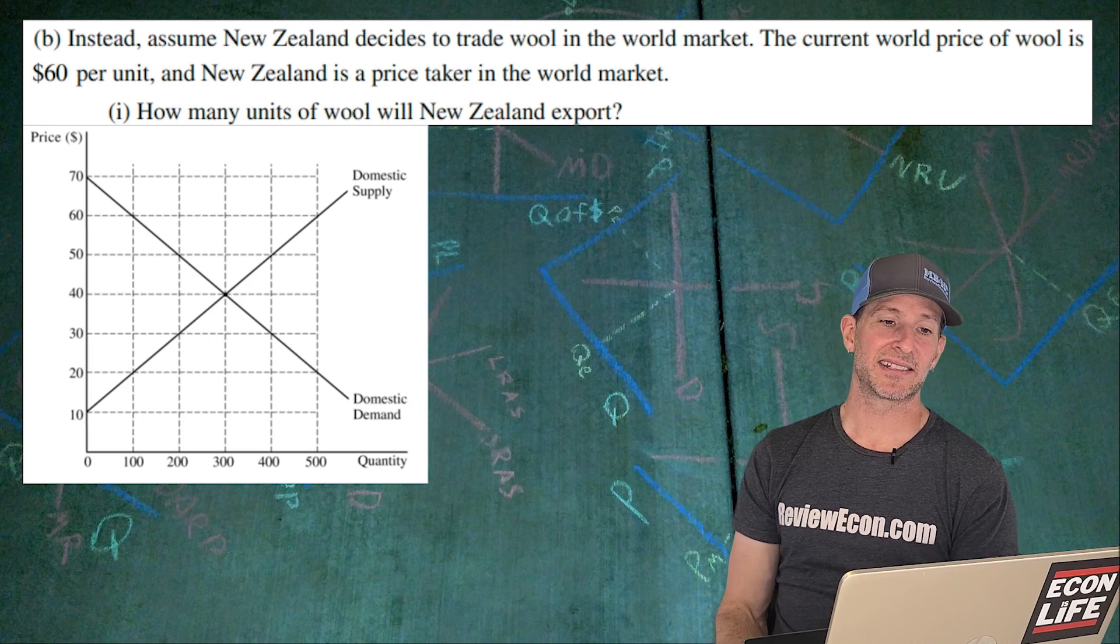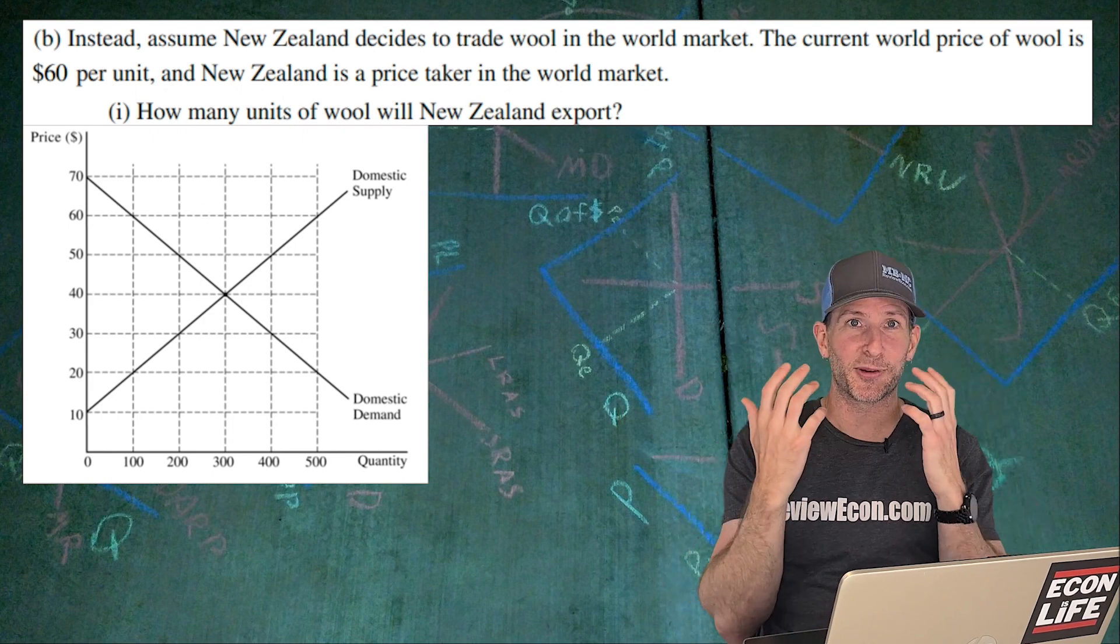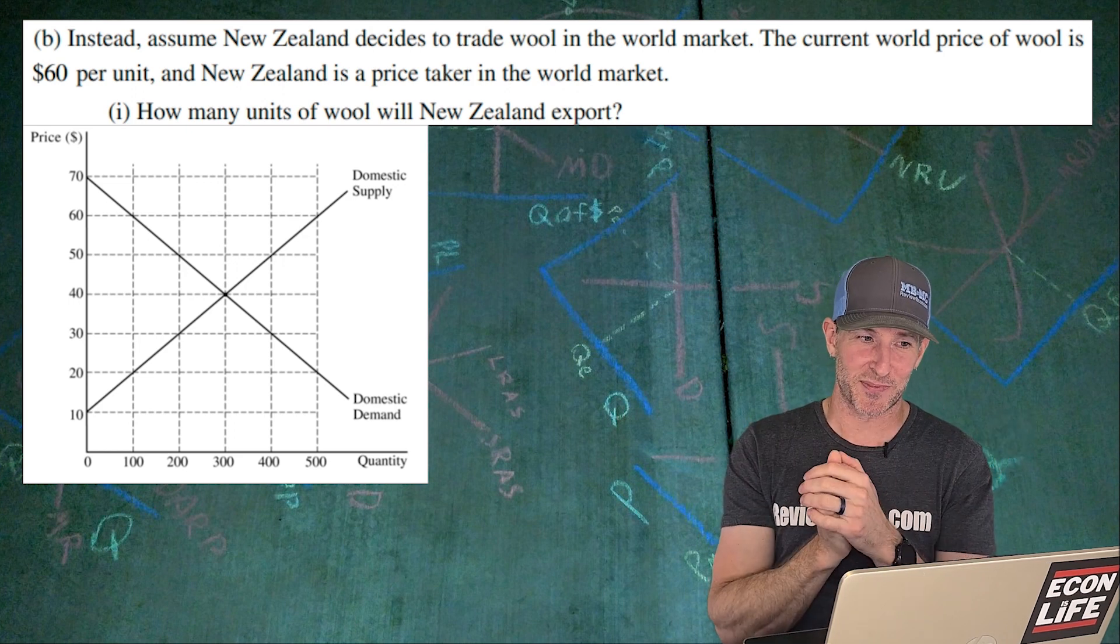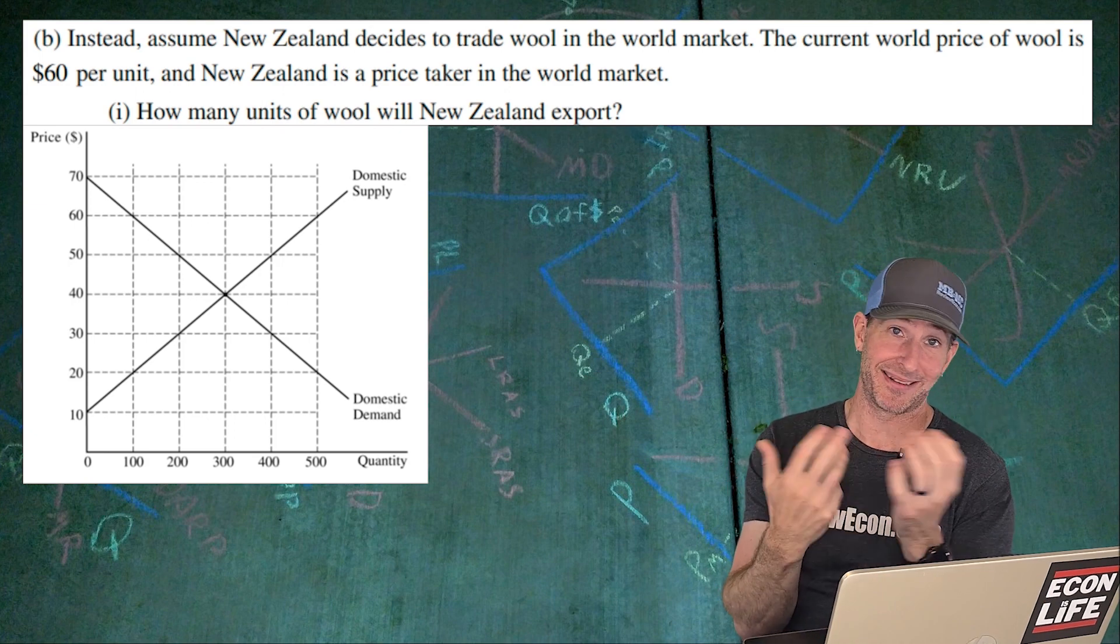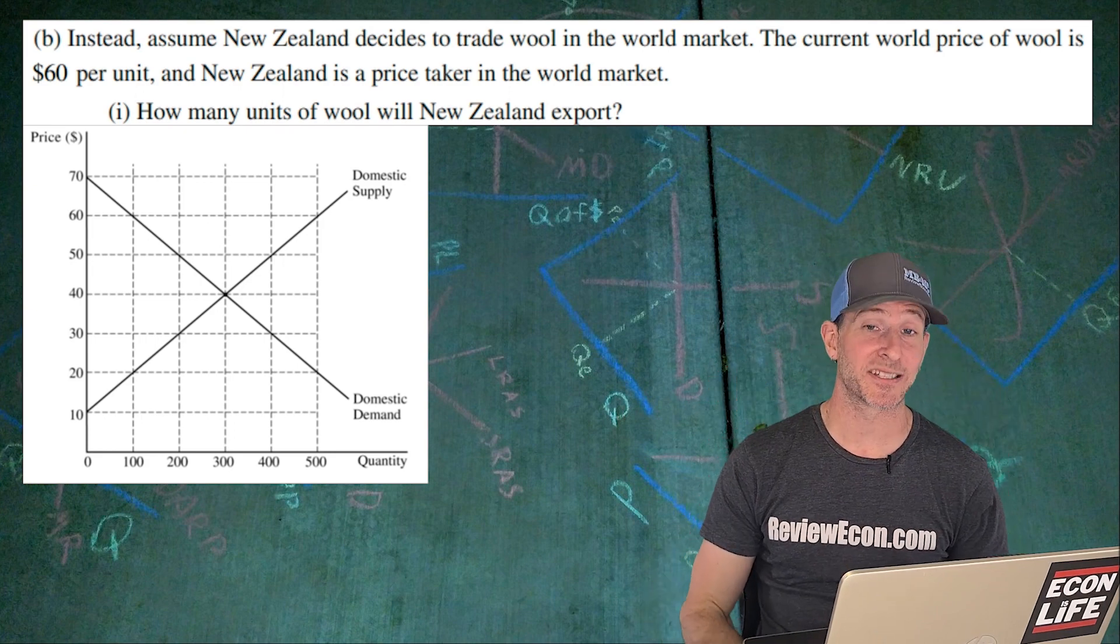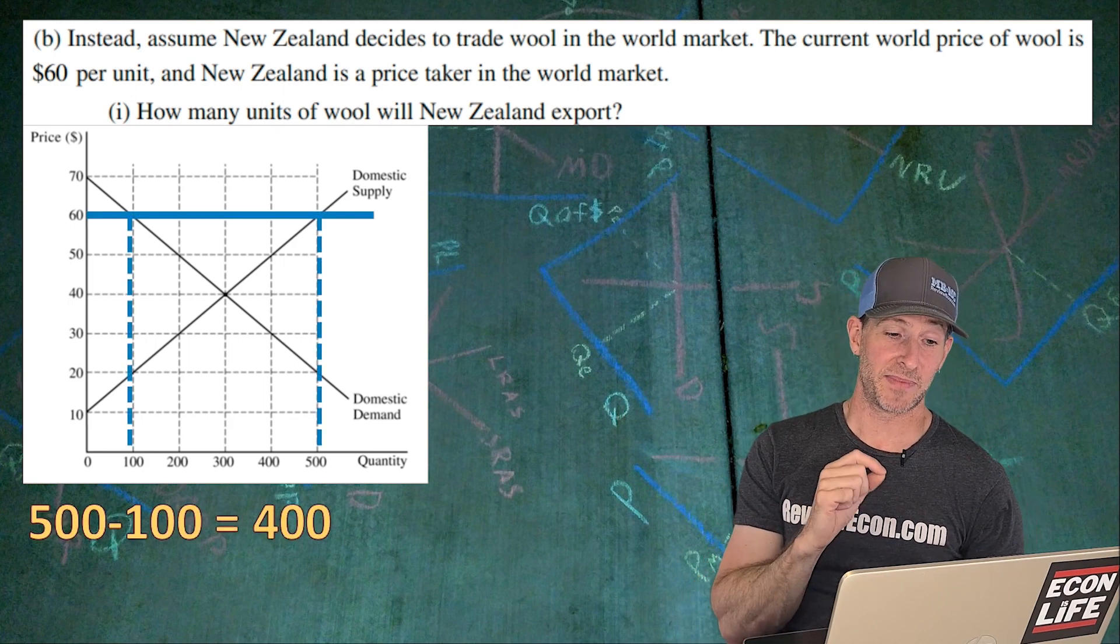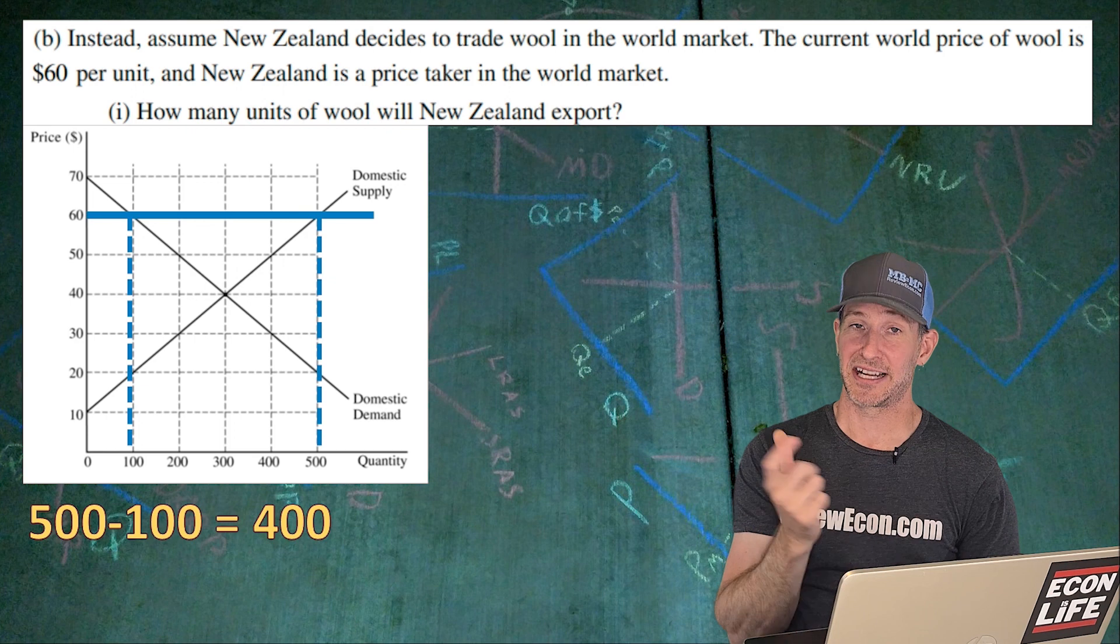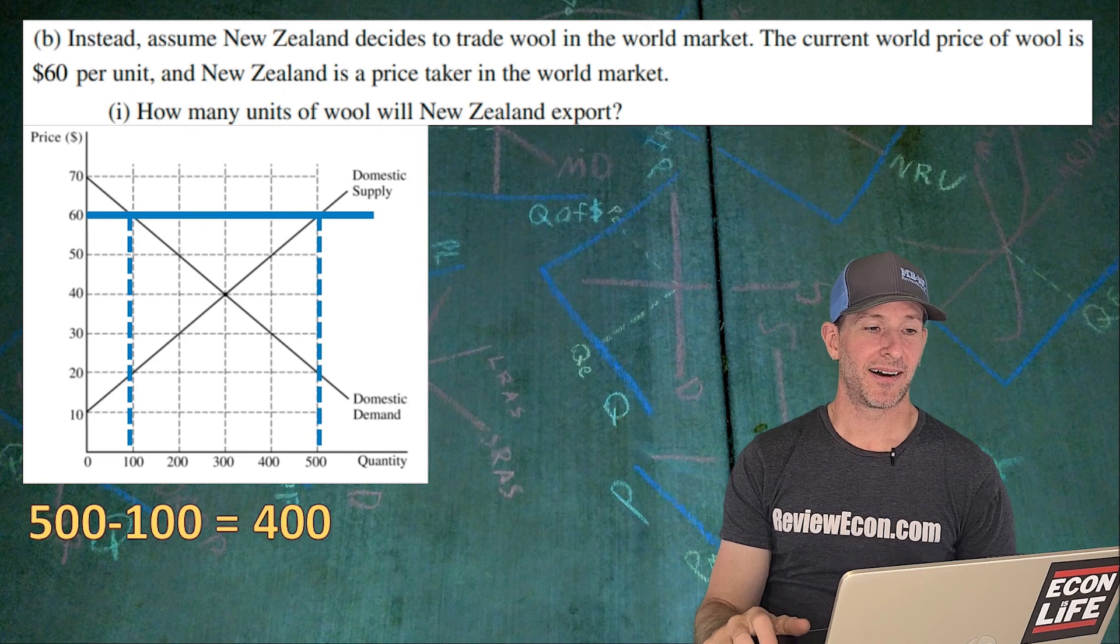Moving on to the next part. Instead, assume that New Zealand decides to trade the wool in the world market. The current world price is, uh-oh, above the equilibrium price. They've never done that before. It's always been below. So at least they give you a hint here on this first part. They say, how many units of wool will New Zealand export? The graph that we've always seen so far has always been an import amount, and the price has always been below equilibrium, but now it's above. And so they're going to actually export wool. So it's actually going to, there's that world price there. It's at $60. We're going to domestically consume 100 units. We're going to domestically produce 500 units. The difference between the two is going to be exported. So 400 units will be exported here.